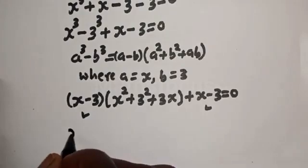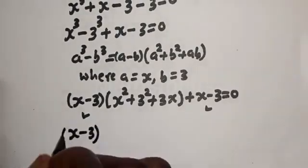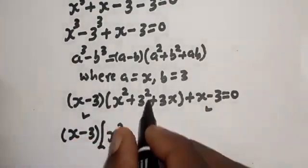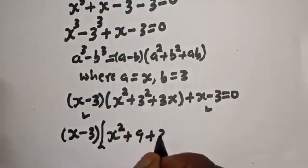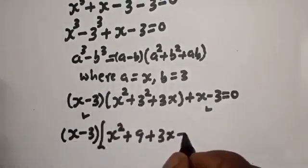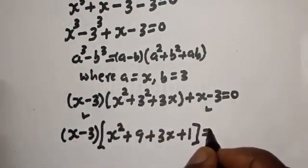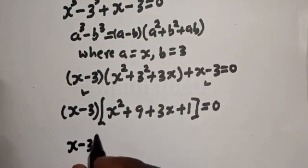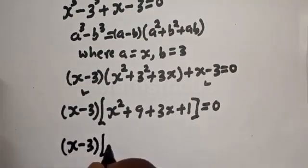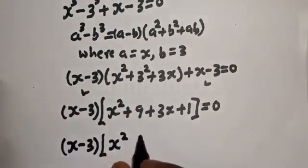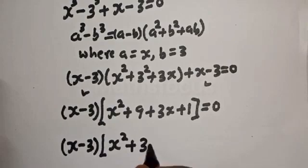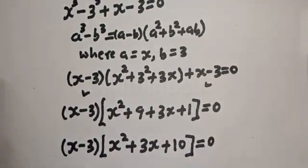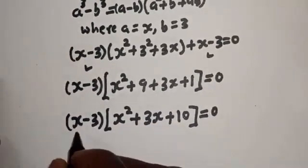From here, (s minus 3) is common in both terms. Bringing it out: (s minus 3) bracket s squared plus 9 plus 3s plus 1 equals 0. This simplifies to (s minus 3)(s squared plus 3s plus 10) equals 0.